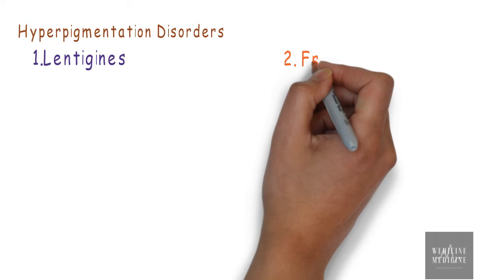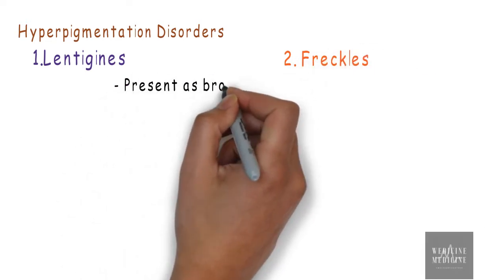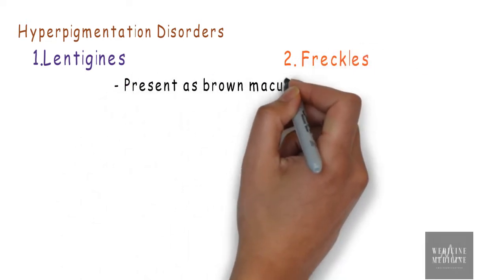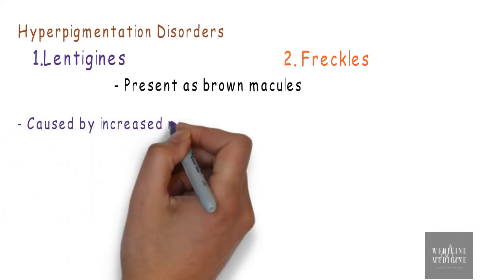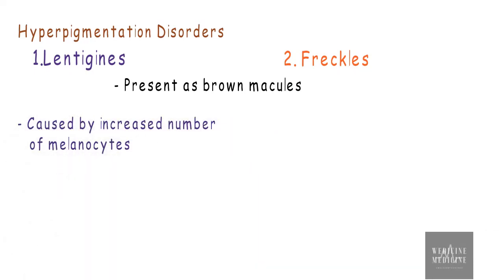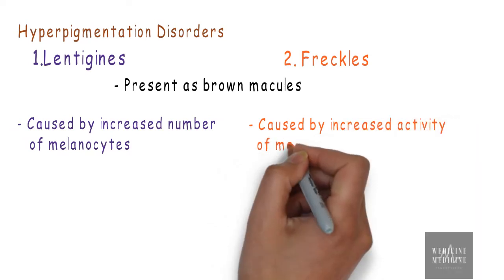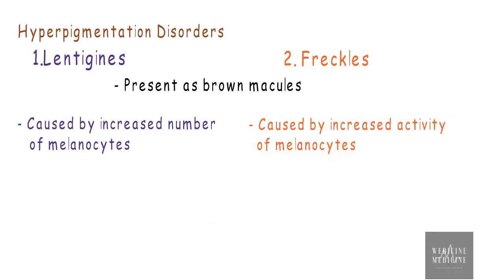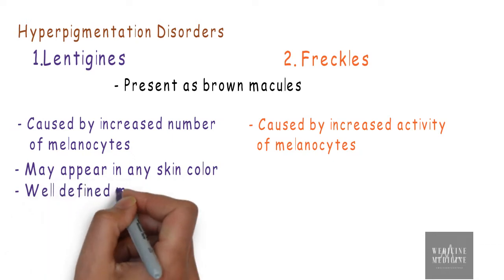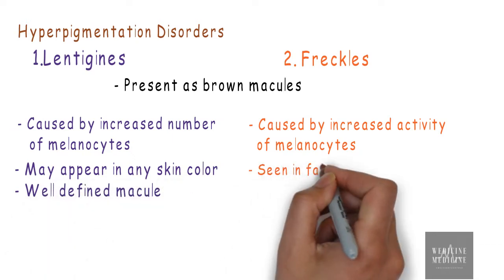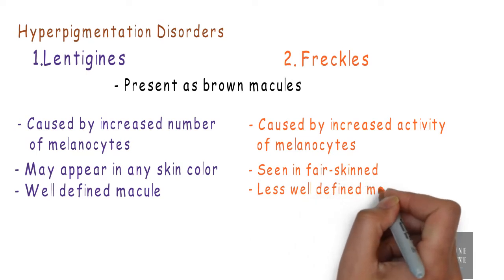The first disorder is lentigens and the second is freckles, both of which present as brown macules but have some basic differences. Lentigens are caused by increased number of melanocytes, whereas freckles are caused by increased activity of melanocytes. Lentigens may appear in any skin color as a well-defined macule, whereas freckles appear in fair-skinned people as a less well-defined macule.